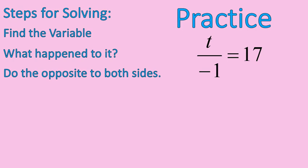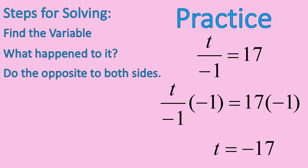t divided by negative 1. So what's my variable? t. The variable is a letter. What happened? We divided by negative 1, t divided by negative 1. So I'm going to do the opposite to both sides. I'm going to multiply both sides of this equation times negative 1. So I have t divided by negative 1 times negative 1. Those two do something called canceling out. What we're doing is negative 1 divided by negative 1 gives us positive 1, so we're left with 1t, which is just written as t. And 17 times negative 1 gives us negative 17.